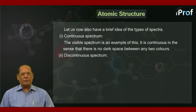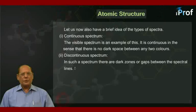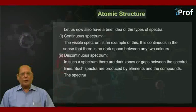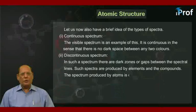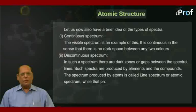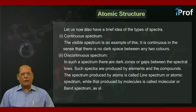Second, discontinuous spectrum. In such a spectrum, there are dark zones or gaps between the spectral lines. Such spectra are produced by elements and compounds. The spectrum produced by atoms is called line spectrum or atomic spectrum, while that produced by molecules is called molecular or band spectrum, as shown below.